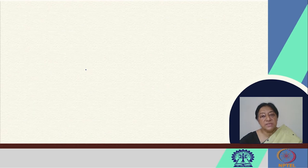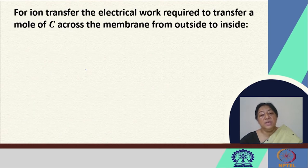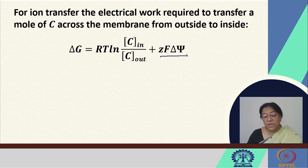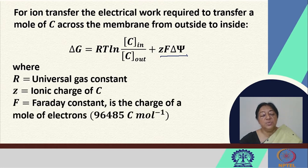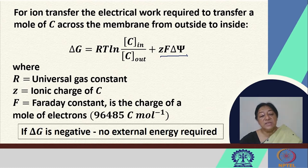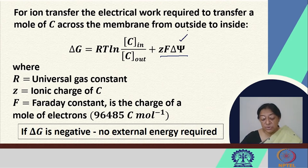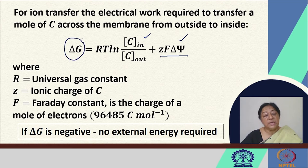Performing a similar exercise for the electrochemical potential, the electrical work associated with transferring the ion is given by z·F·delta psi. The total delta G includes both the chemical potential and the electrochemical potential terms — RT ln(C_in/C_out) plus z·F·delta psi. If this delta G is negative, the process is spontaneous and no external energy is required for the transfer to occur.